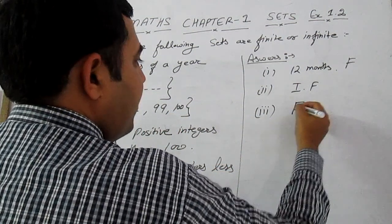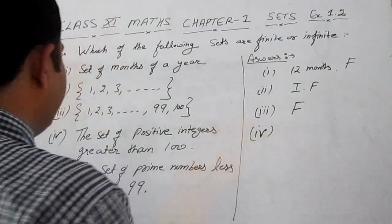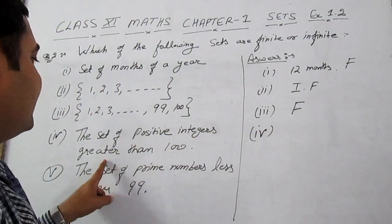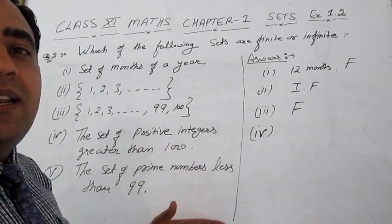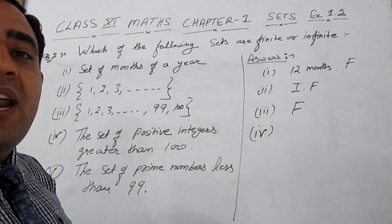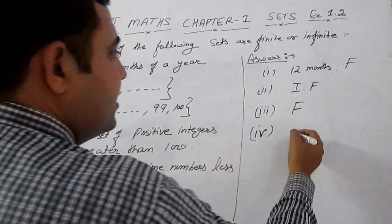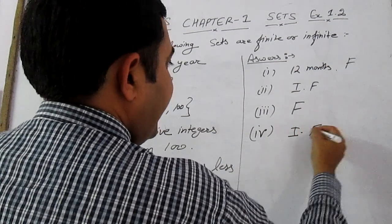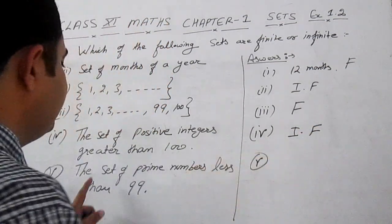Part four is the set of positive integers greater than 100. Greater than 100, there are an infinite number of positive integers; therefore, it is an infinite set. Part five is the set of prime numbers less than 99.